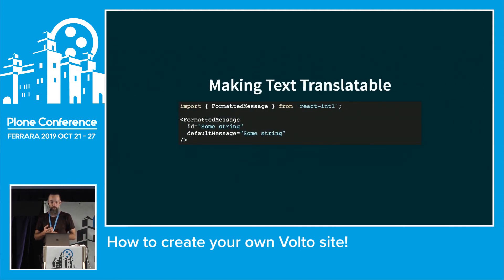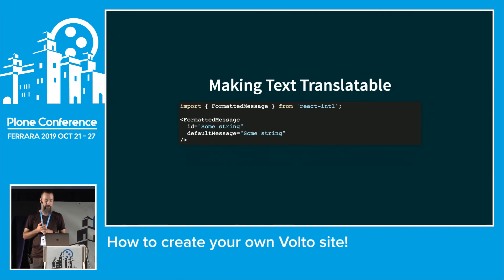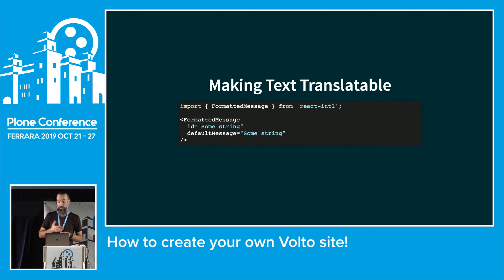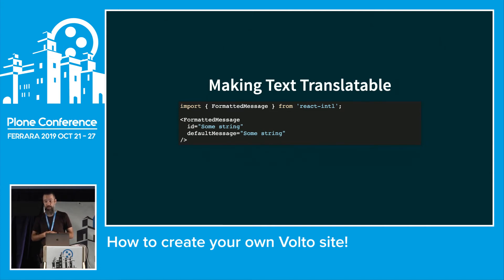To make text translatable, react-intl provides a helper component called FormattedMessage. It's a component where you render an id and a default message — same as we're used to in Plone — and it picks up the translation from the translation machinery and displays it in your language.